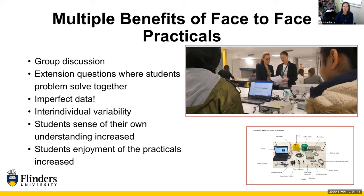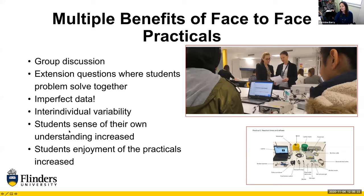Another real benefit of in-person practicals was that students had the opportunity to see what imperfect data looked like. Instead of perfect example data, they had to predict what good data should look like and troubleshoot when they weren't getting expected results — learning that getting data is not always as easy as it sounds. It also allowed them to appreciate individual variability between physiological parameters across different people in the class. Students reported that their sense of understanding of both the practical work and associated lecture content really increased, and they all reported enjoying in-person practicals far more than the online alternative.